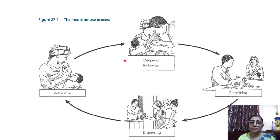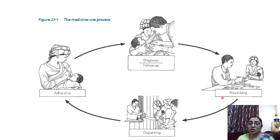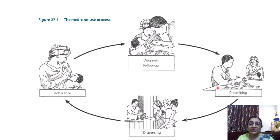First, make a proper diagnosis. After diagnosing the patient, choose the appropriate drug according to the patient's need. Ask about any allergic reactions and contraindications cautiously, then prescribe accordingly. After dispensing, instruct the patient when and how many times to take the medicine. Finally, ensure patient adherence through follow-up.